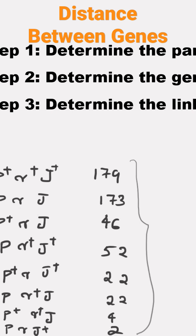So, here you can see that 179 and 173. So, these are the most frequently appearing genotypes. So, this is the parental. Parental 1. So, P plus R plus.